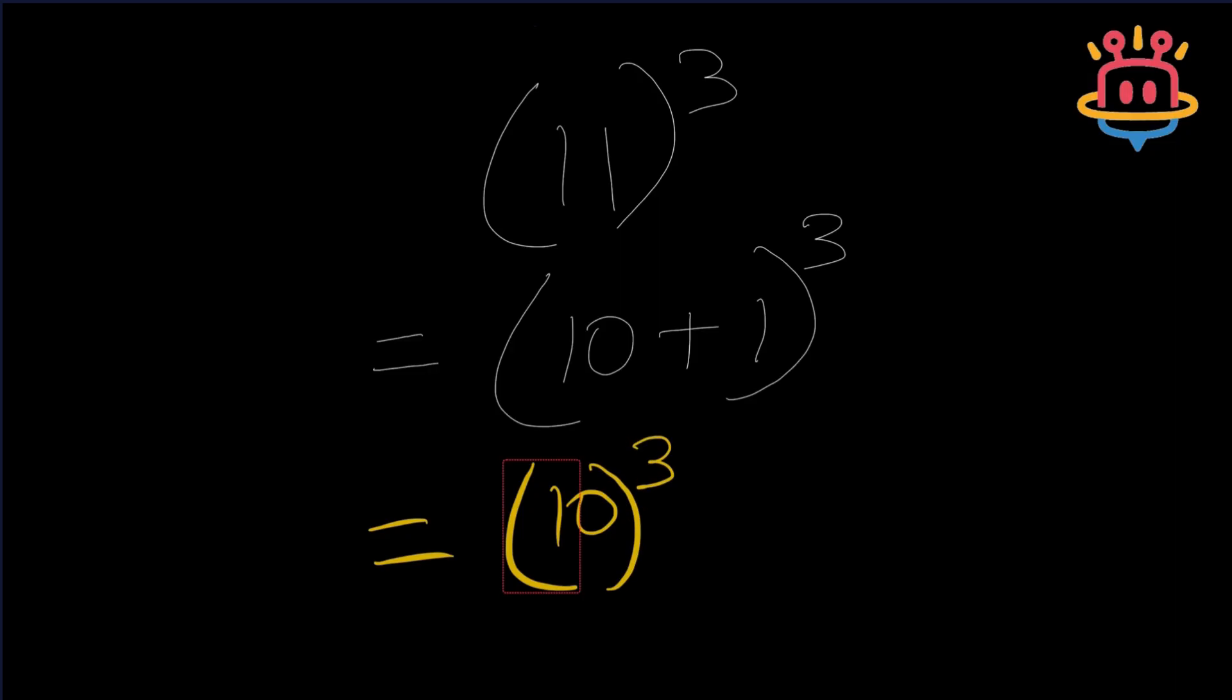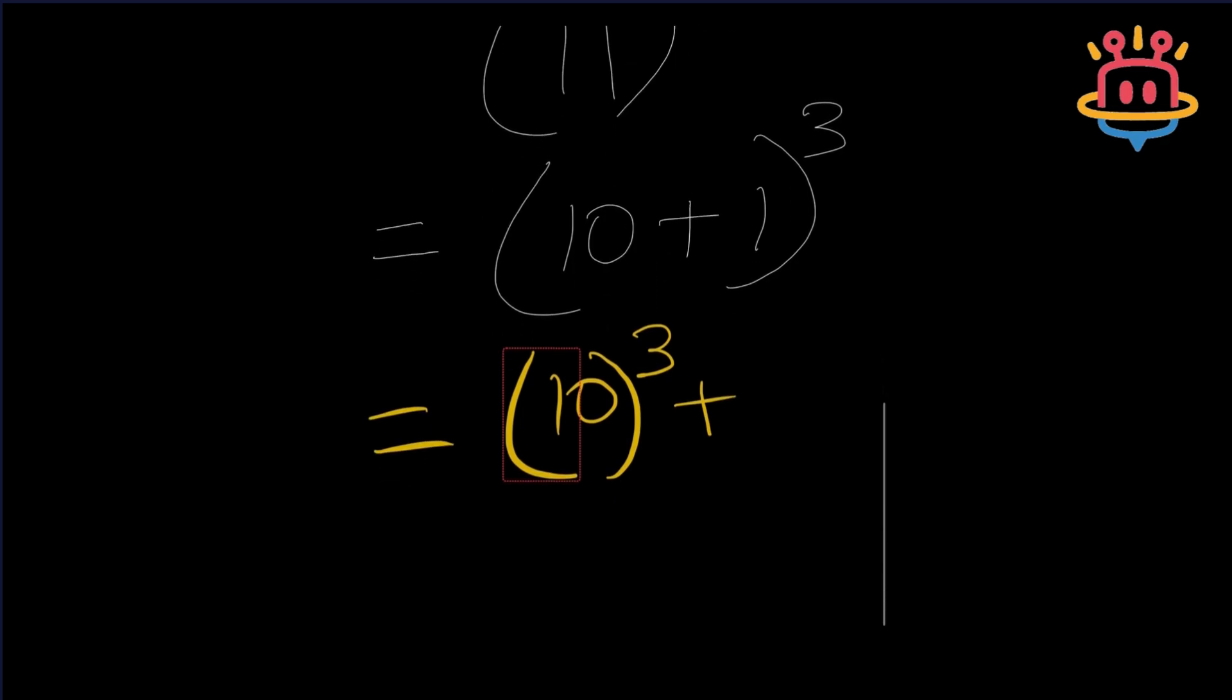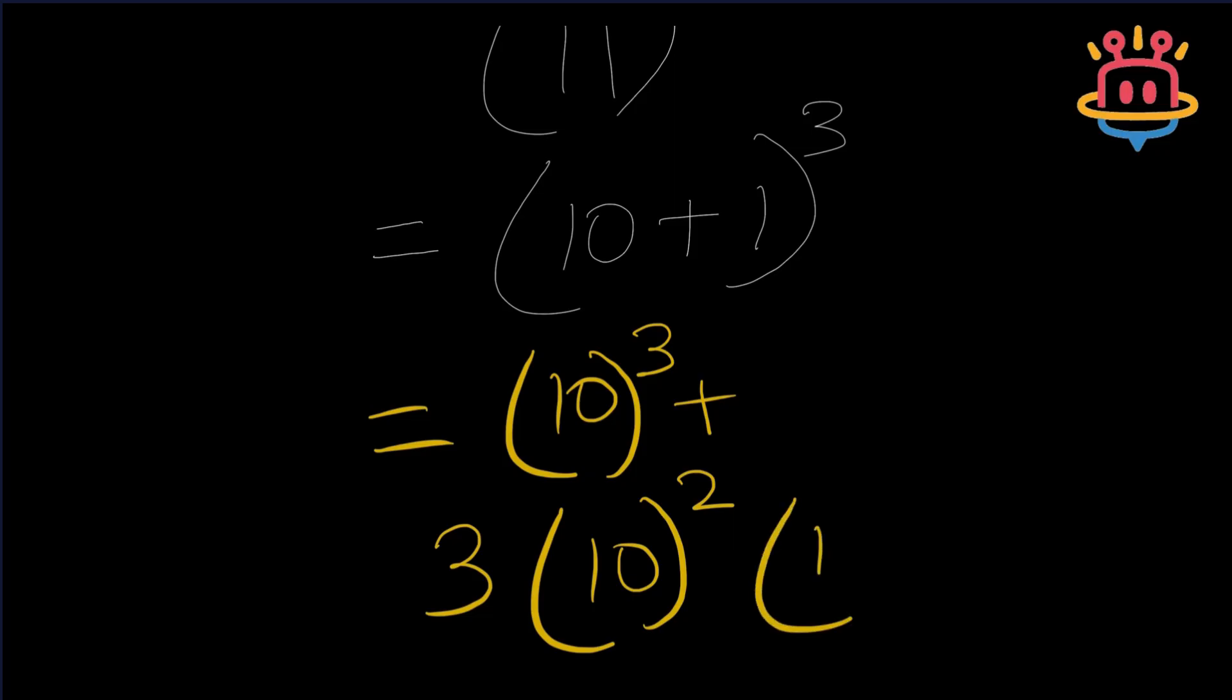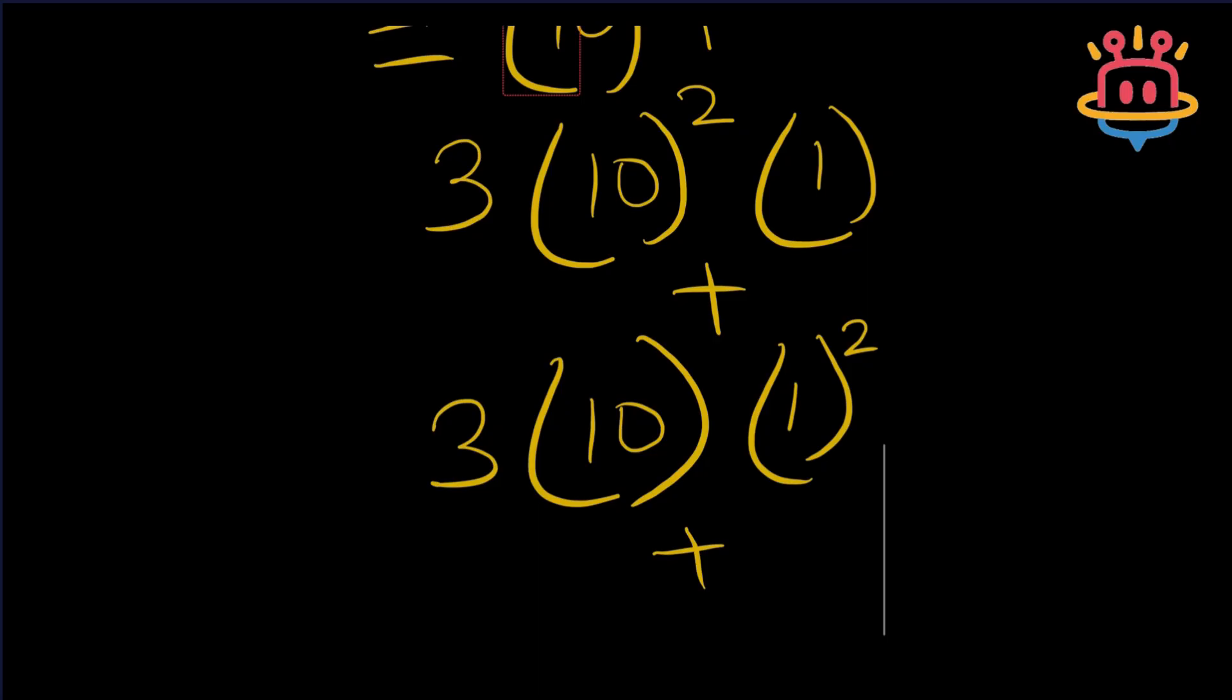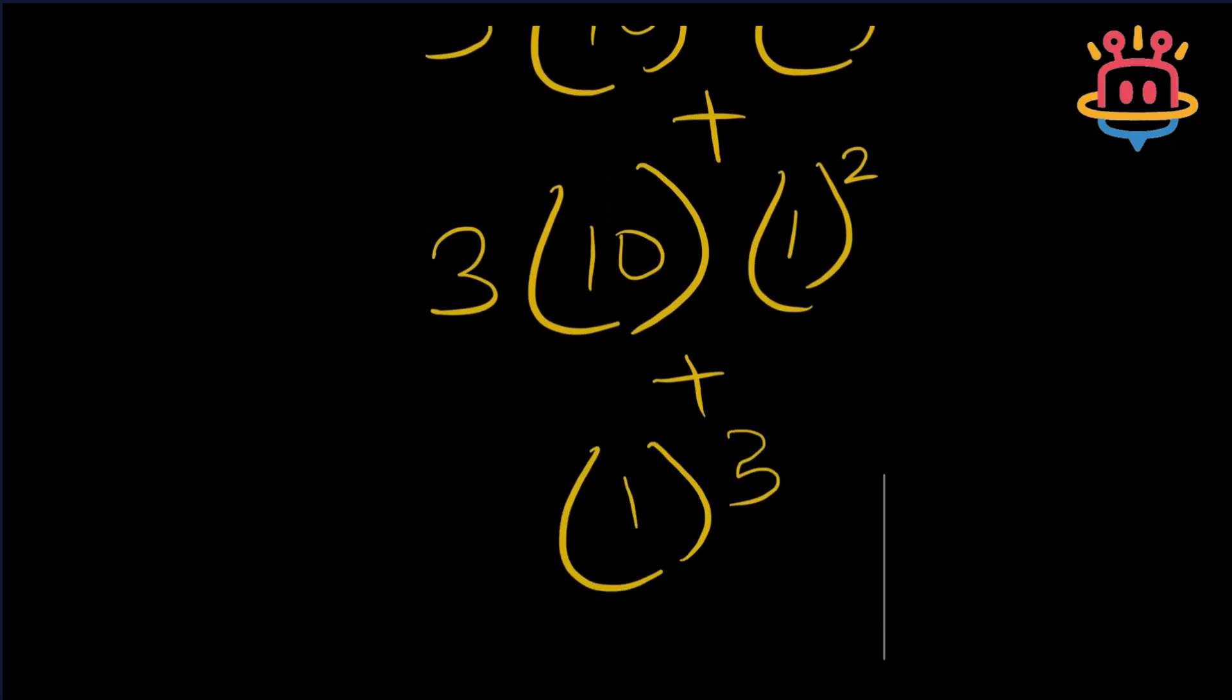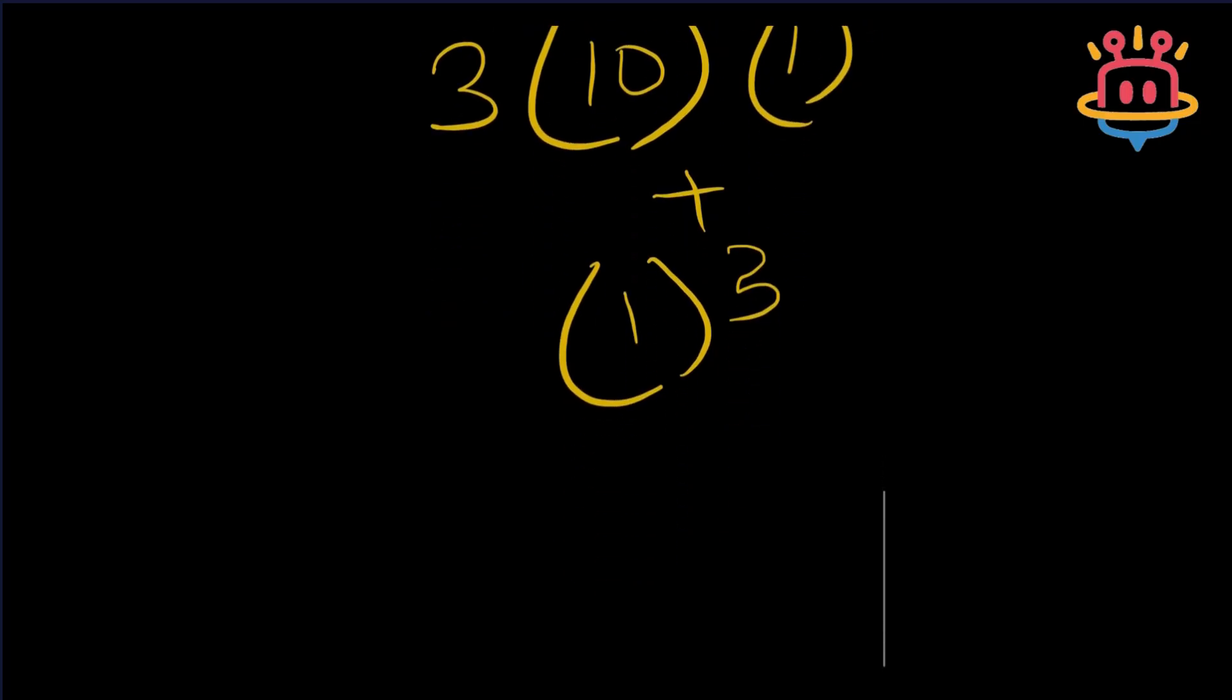First we are going to get the cube of 10. Then this is how we are going to expand the rest. So we have 3 times square of 10 times 1, plus we have 3 times 10 times square of 1, plus we have cube of 1. So how are we going to expand this? Let's see.